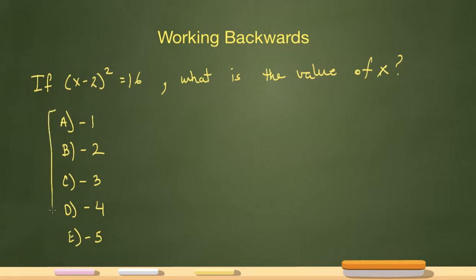The answer has to be one of these five answer choices. Let's start off by making an assumption that negative 3 is my answer. So if negative 3 is my value of x, it would be negative 3 minus 2 squared, which is negative 5 squared, which is 25. That doesn't work and it's too high.